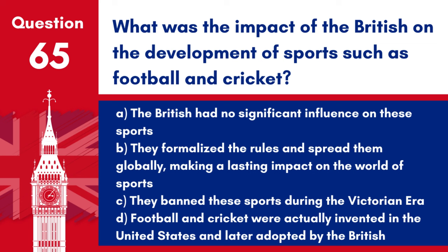Question 65: What was the impact of the British on the development of sports such as football and cricket? a. The British had no significant influence on these sports. b. They formalized the rules and spread them globally, making a lasting impact on the world of sports. c. They banned these sports during the Victorian era. d. Football and cricket were actually invented in the United States and later adopted by the British. Answer: b. The British are credited with formalizing the rules of many sports, including football and cricket, and played a key role in their international spread and popularity.